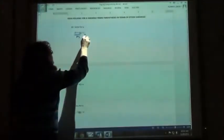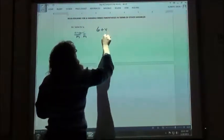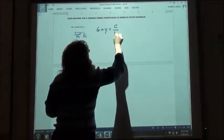On the first one here, I'm going to go ahead and divide by the n. If I divide by n, I'm going to have 6 plus y equals c over n, right?